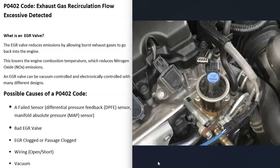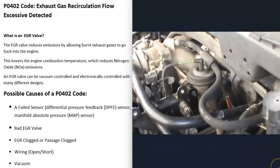If the EGR valve is electronically controlled, there might be a wiring issue. If you've checked everything else and can't find the problem, get schematics for your particular vehicle and check for any opens, shorts, or other faults in the wiring. Some kind of issue inside the wiring is another possible cause of the P0402 code.